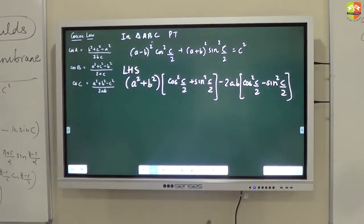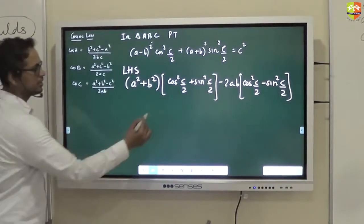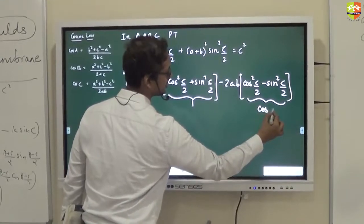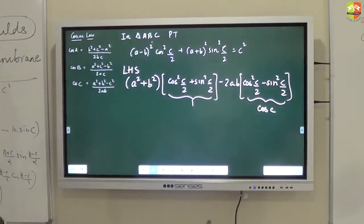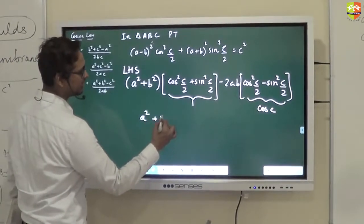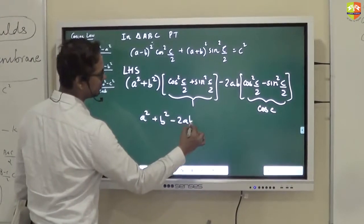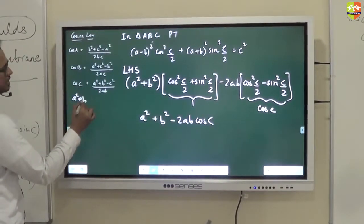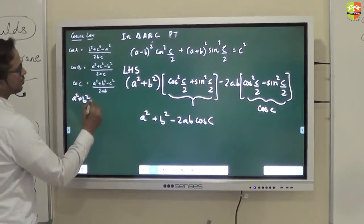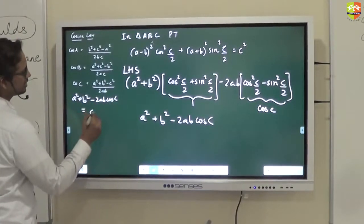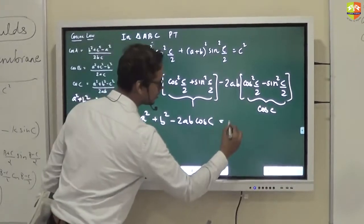If you expand the left side, this is what you're doing. So basically you get a² + b² - 2ab, and this is cos c. And from here a² + b².